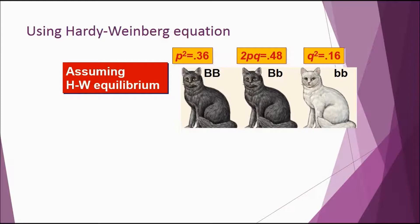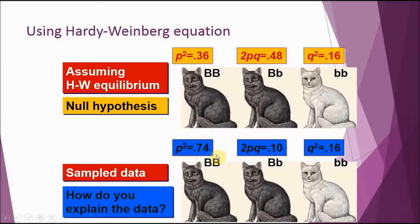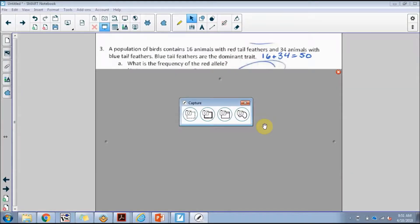If you were to sample the population later and find that p squared is now 74 percent, heterozygous is now 10 percent, and recessive is still 16 percent, you can see that the first two changed. You can say that population is evolving. Notice the same three phenotypes still exist, but the frequency of them has changed — and if allele frequencies are changing over time, the genetics of the population are slowly changing over time.